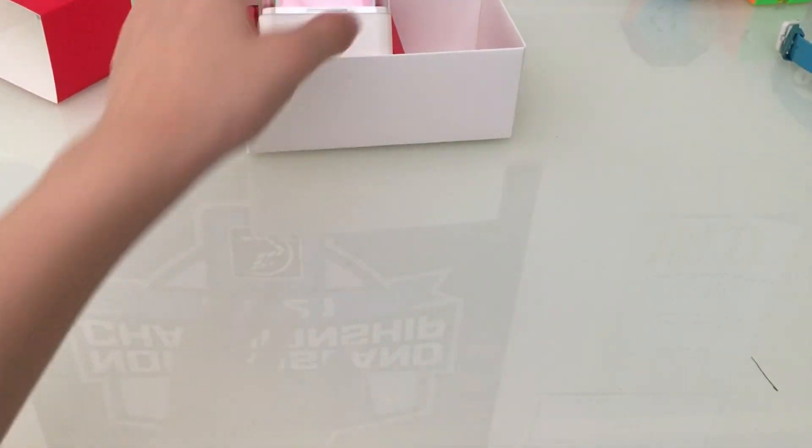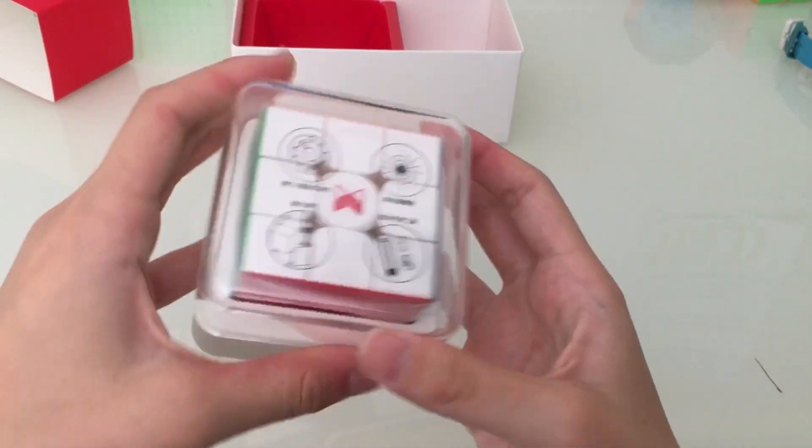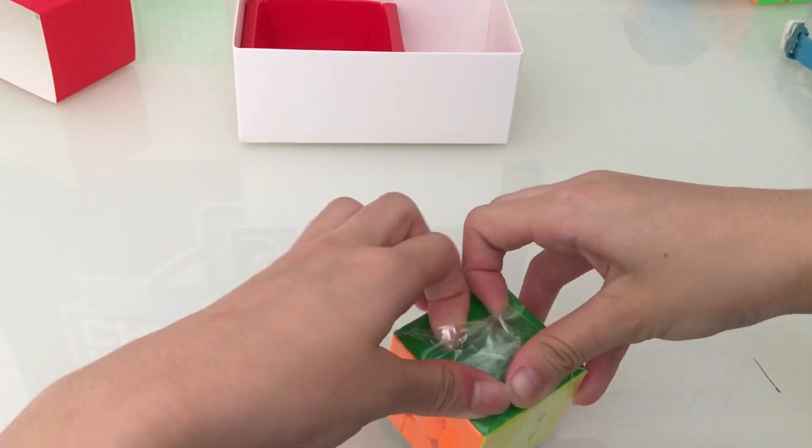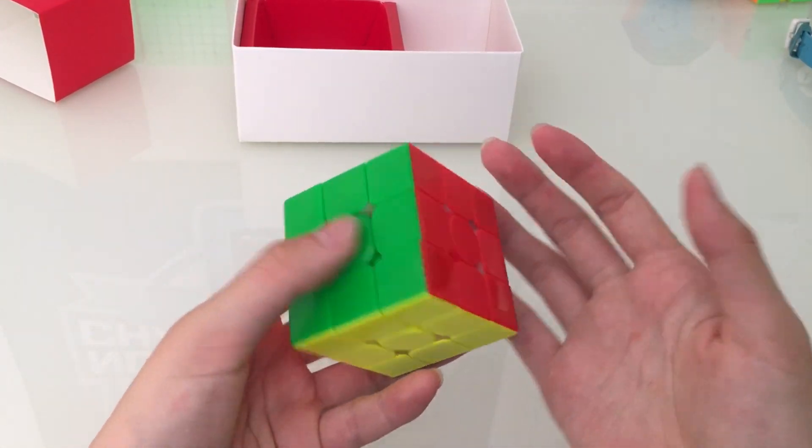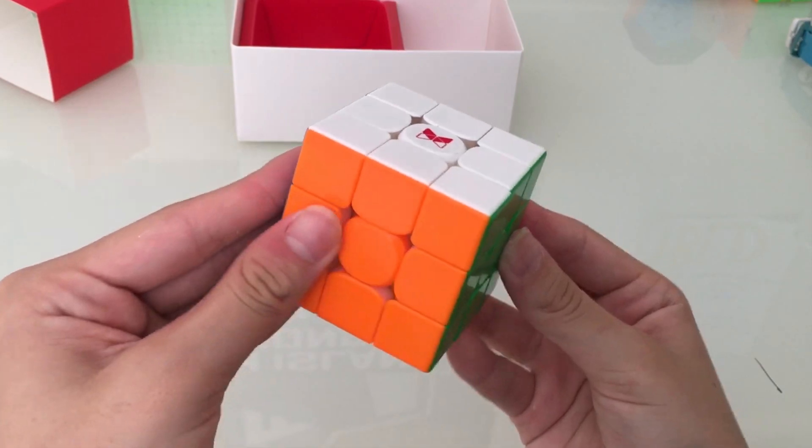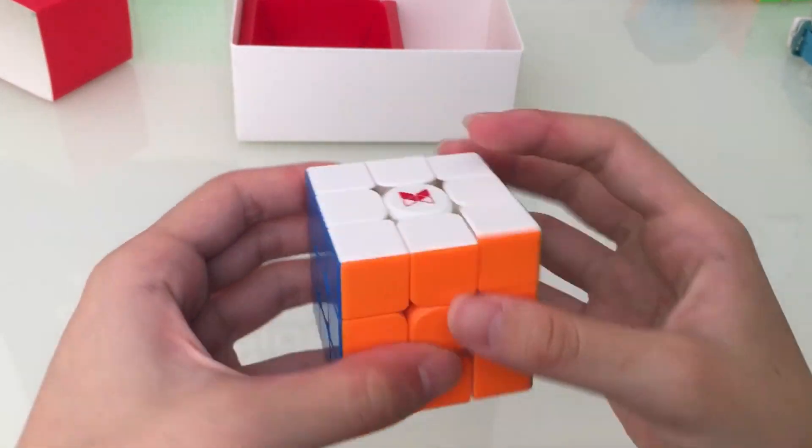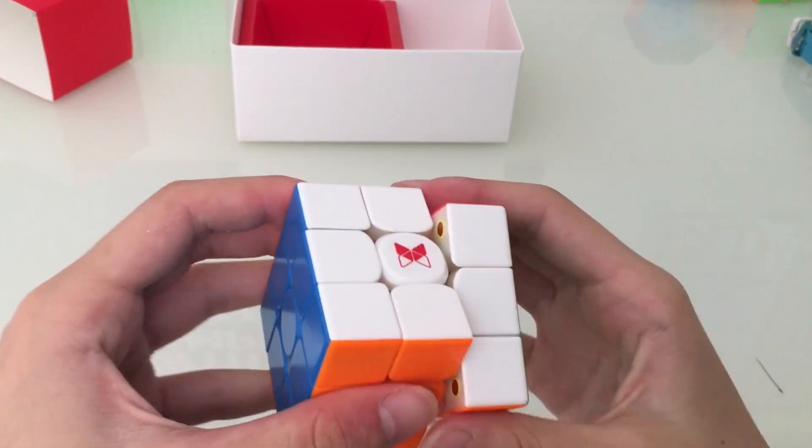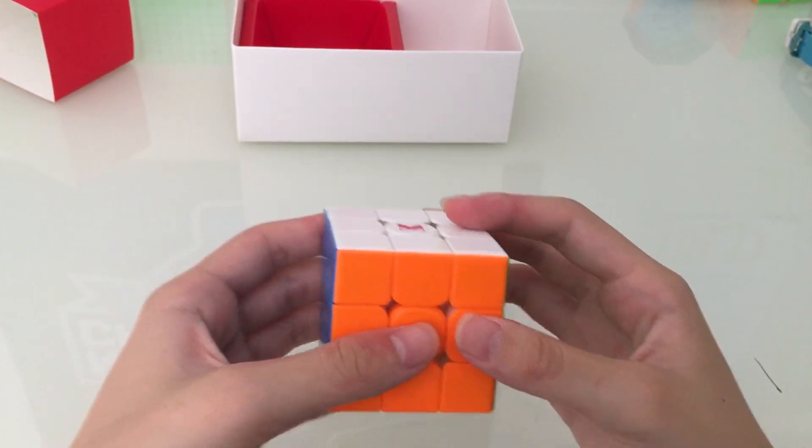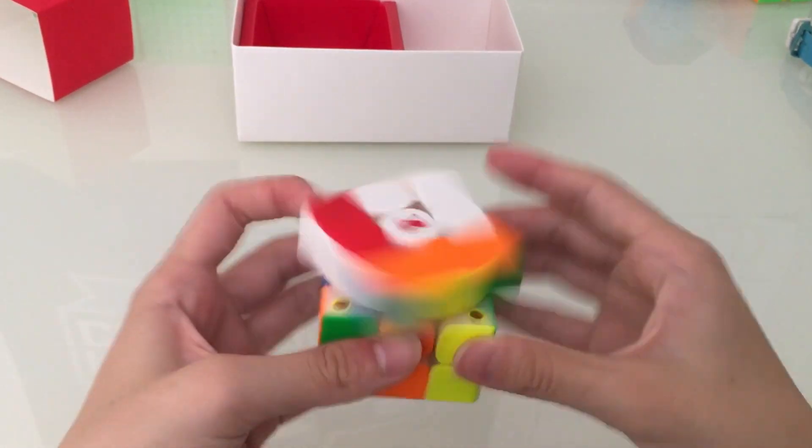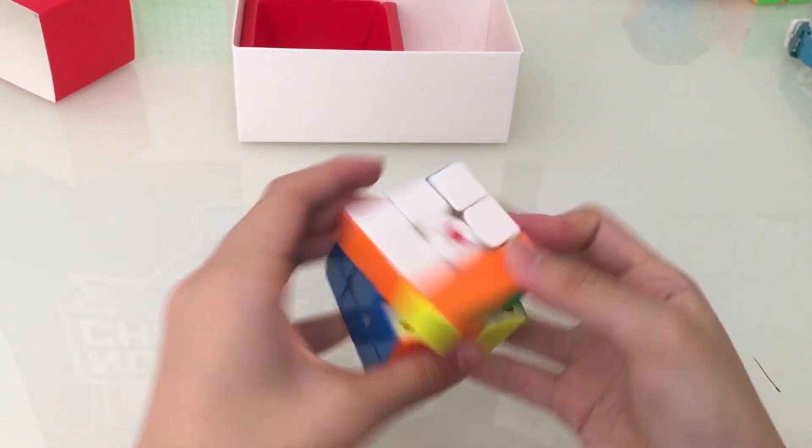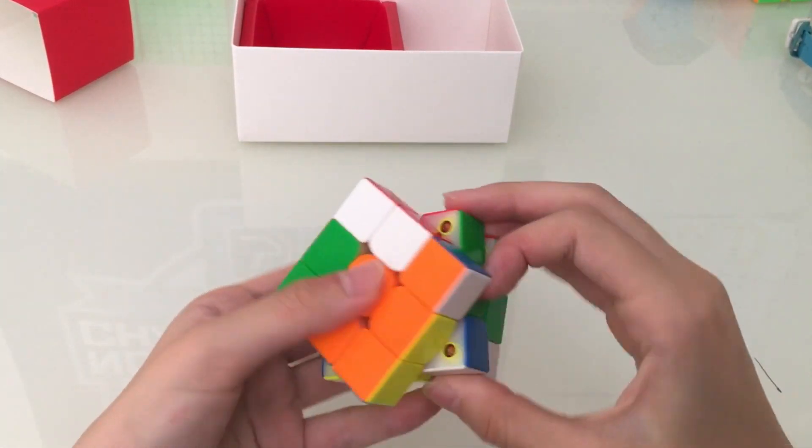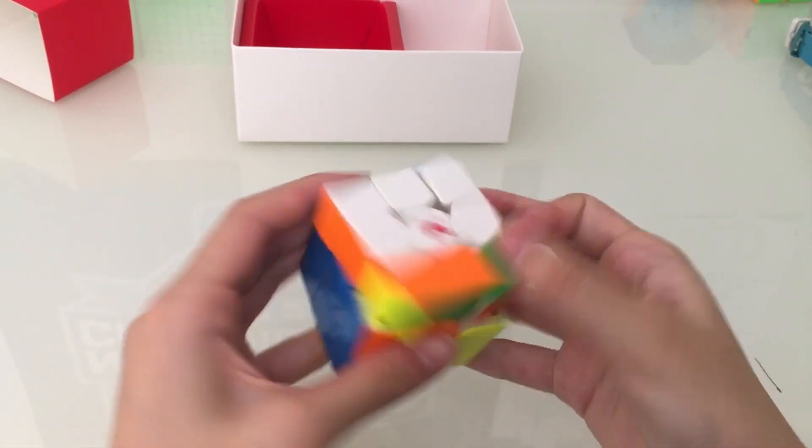Okay, so now let's get into the actual cube, which is what you guys actually care about. Wow, that is a lot of lube. There is a lot of lube on here. No wonder they provide the cleaning cloth. Okay, wow, first turns feels very nice. It's very light. I feel a bit of catching but it's very light and fast.